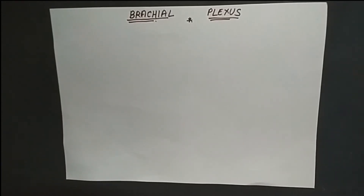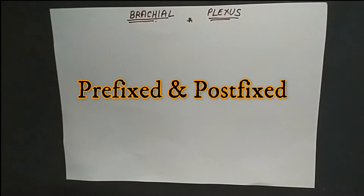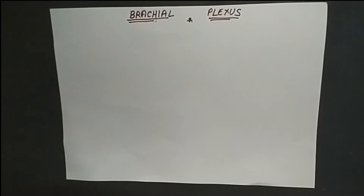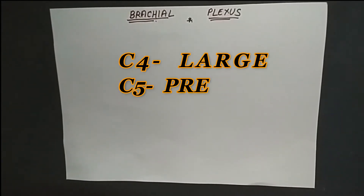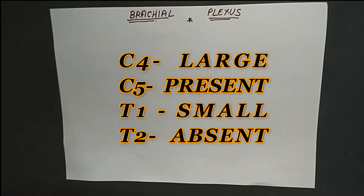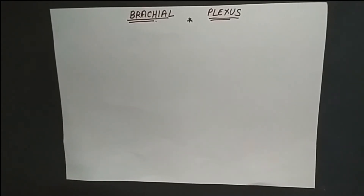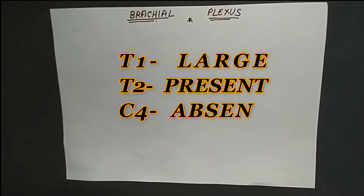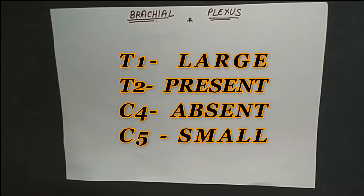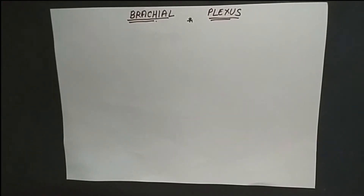Two variations can happen: prefixed and postfixed. Prefixed means C4 is included and T2 is absent — C4 is large, C5 is present, T1 is small, and T2 is absent. Postfixed means T1 is large, T2 is present, C4 is absent, and C5 is reduced in size.